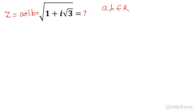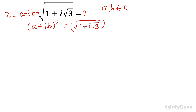Take square of both sides. By taking square, a plus ib whole square is equal to the square root of 1 plus i root 3, whole squared. The square root and whole square get cancelled out, so what is left is 1 plus i root 3.